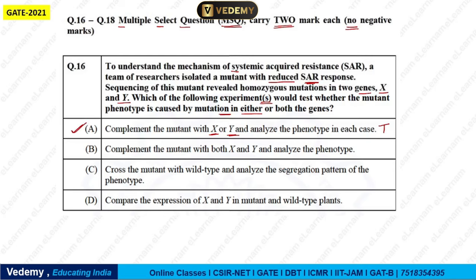Option B says: complement the mutant with both X and Y and analyze the phenotype. By combining both and complementing together, we can also determine what the phenotype reveals. Option A does each separately; option B combines both — but we can perform this experiment as well. Option C says: cross the mutant with wild type and analyze the segregation pattern of phenotype. Analyzing how the phenotypes segregate can also reveal which gene is responsible for the reduced SAR response. Yes, we can perform this too.